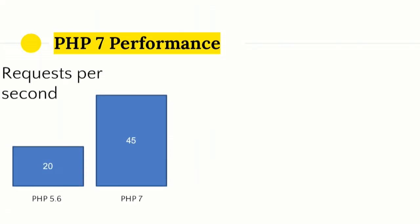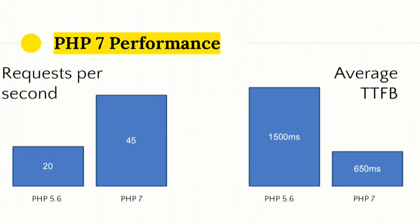On requests per second, I could get around 20 out of PHP 5.6, but around 45 requests per second on PHP 7. The response time on PHP 5.6 was about 1500 milliseconds — that's time to first byte. On PHP 7, that was coming out at about 650 milliseconds. This is without caching or any of the usual optimizations, just literally testing the WordPress PHP. So you can serve more than twice the requests at more than twice the speed without changing a single line of code, pretty much, in the average codebase.